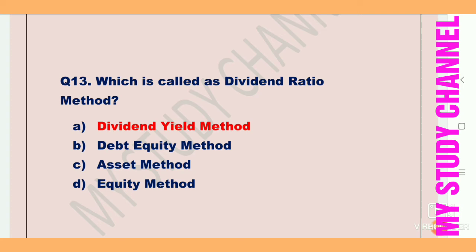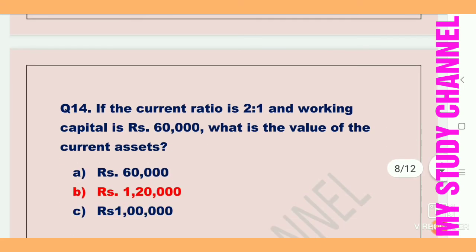Next question: if the current ratio is 2:1 and working capital is 60,000 rupees, what is the value of current assets? The answer is option B — 1,20,000 rupees, which is double the working capital. If the current ratio is 2:1, you multiply the working capital by the first number of the ratio. So 60,000 into 2 equals 1,20,000 rupees.